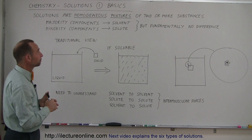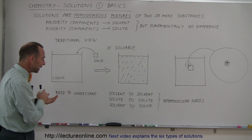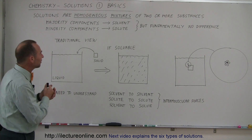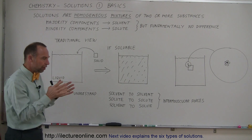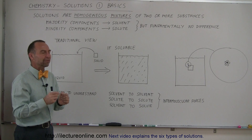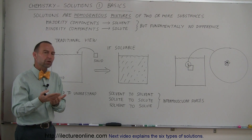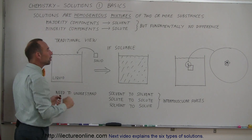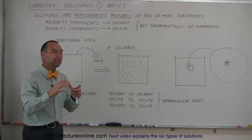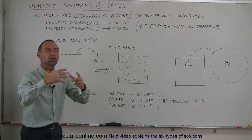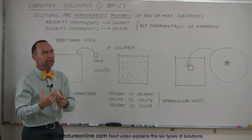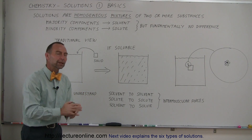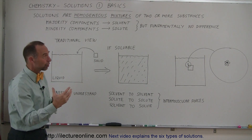It doesn't have to be two — it could be more. We typically deal with two as it's easy to work with. The one you have the most of is called the solvent, and the one you have the least of is called the solute. So the solvent is the majority component. The solvent typically dissolves the solute, so the solute tends to be the minority component.